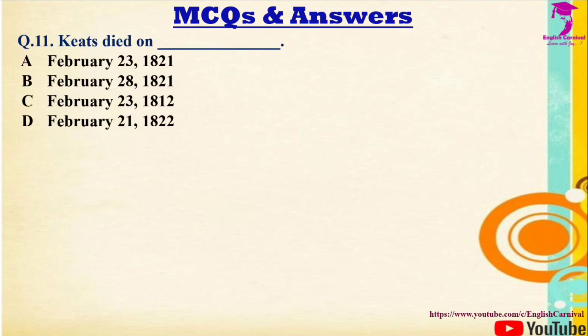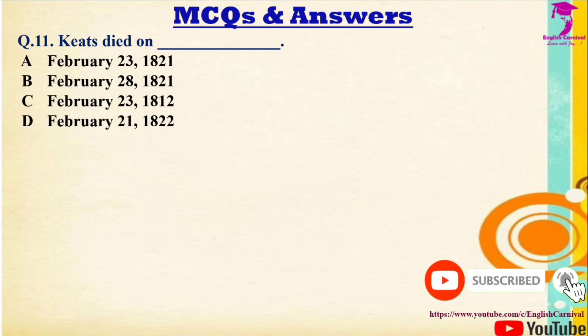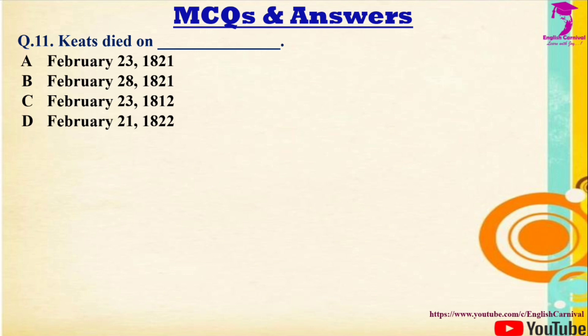Question 11: Keats died on — Options: A) February 23rd 1821, B) February 28th 1821, C) February 23rd 1812, D) February 21st 1822. Correct answer is A — February 23rd, 1821.